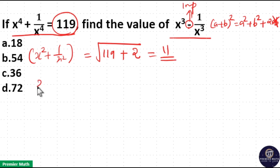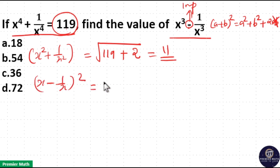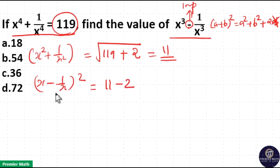Now, to get these two terms, I should take the square of x minus 1 by x. From this, x square plus 1 by x square is equal to 11, and plus 2 into the product of these two terms means 2 into minus 1, that is minus 2. From this, x minus 1 by x is equal to root of 11 minus 2, root 9 is 3.